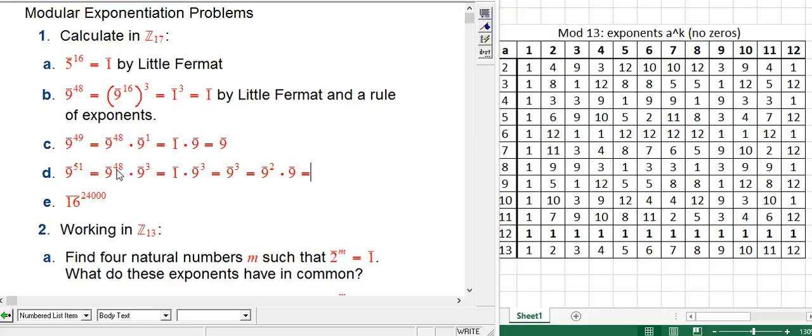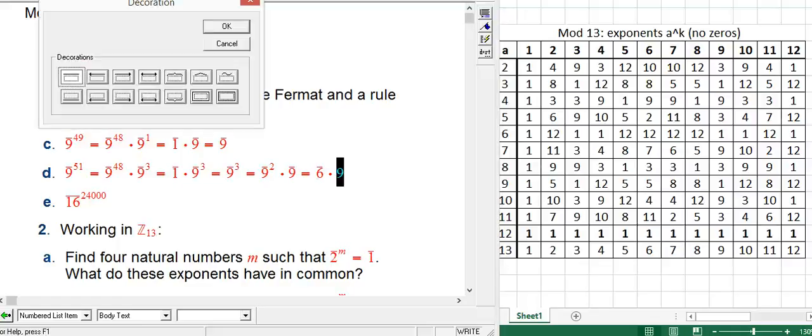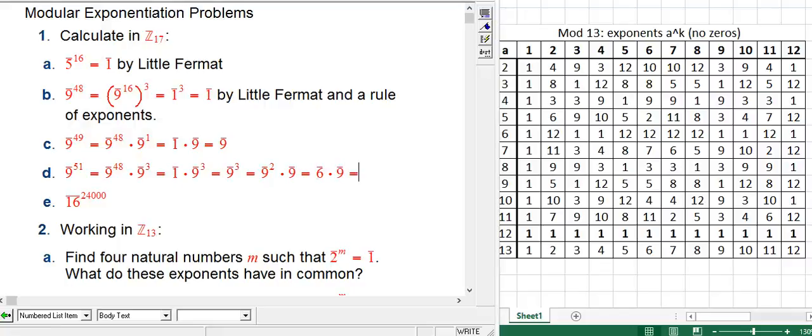If you reduce that mod 17, 17 times 5 is 85. So that's 6 with a bar on top. Times 9. So the only computation I had to do was 81, ordinary 9 squared, and then divide it by 17 and take the remainder, and you get 6. 6 times 9 is 54. Subtract 51, which is a multiple, and you get 3.